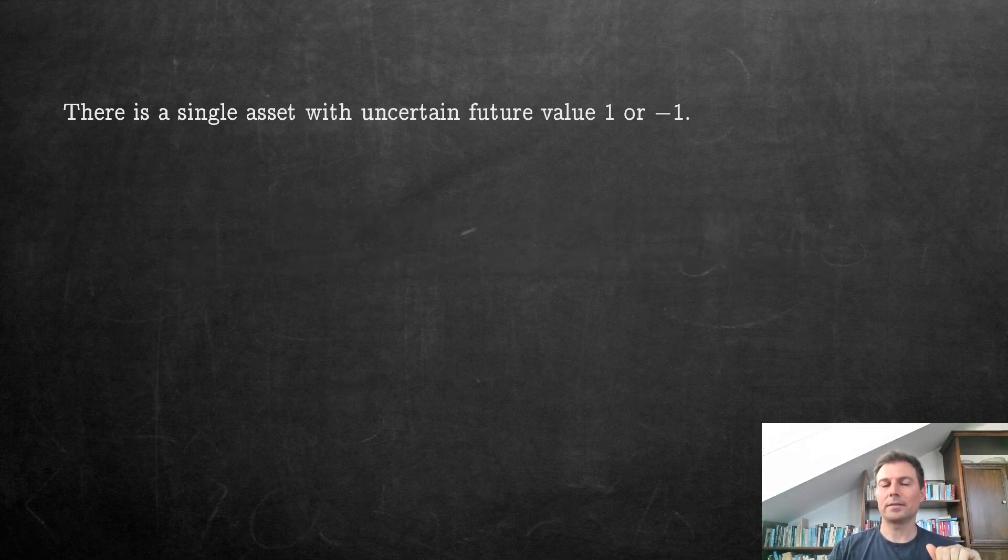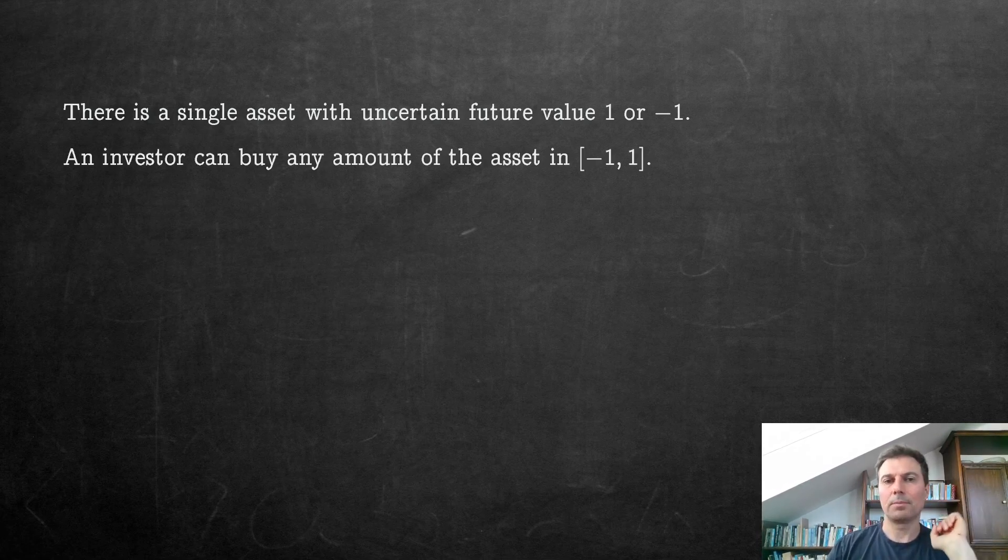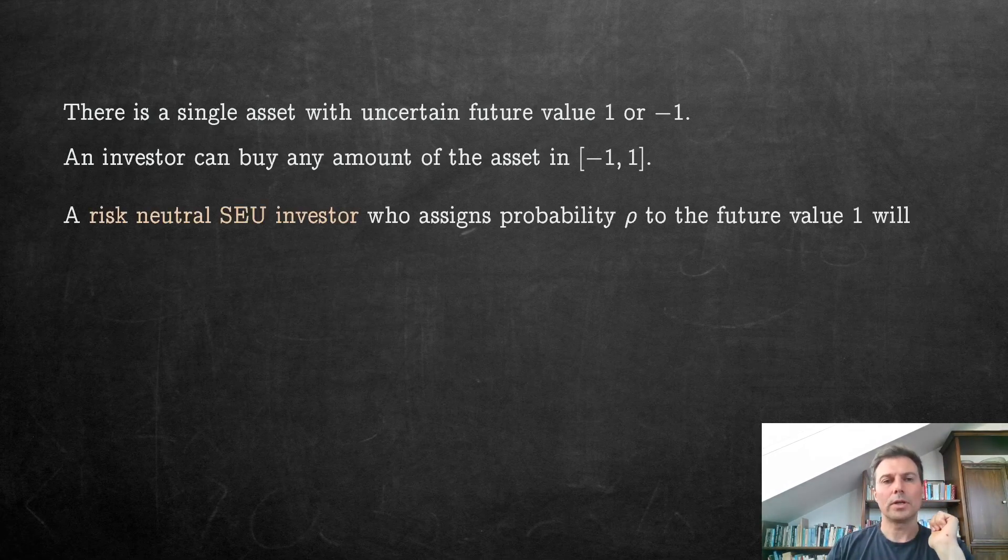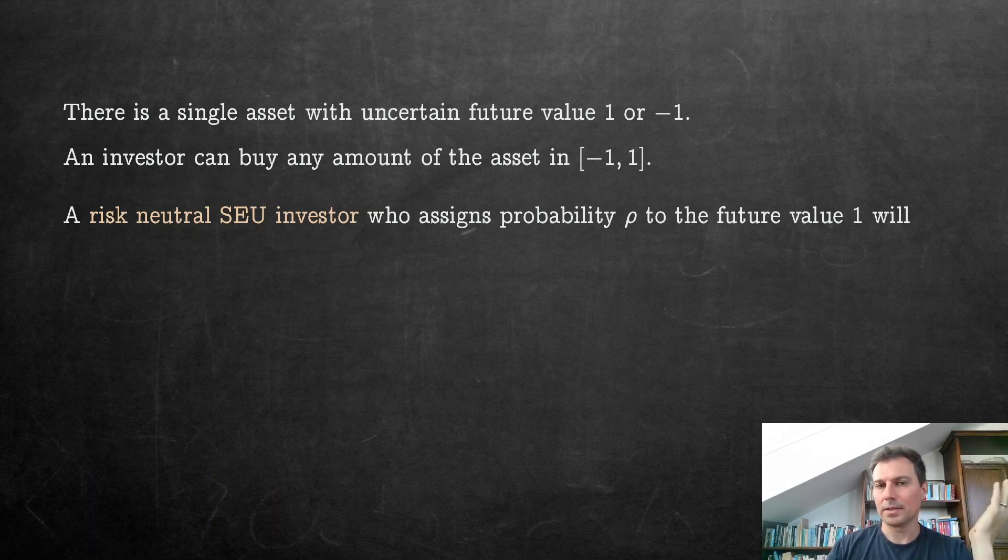That's a single asset with uncertain future value 1 or minus 1, and an investor can buy any amount of the asset in this interval, minus 1 to 1. Of course, actually, our investors will always go extreme: either minus 1, 1, or 0. And a risk-neutral subjective expected utility investor, for instance, in the example, would do what?